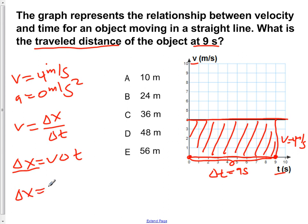So delta x is simply the area of this graph here under this portion from 0 to 9 seconds. We plug in for our velocities, which is 4 meters per second, and for a time of 9 seconds. And we would find that our travel distance would be 36 meters.